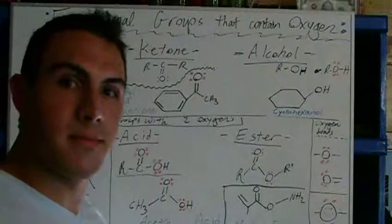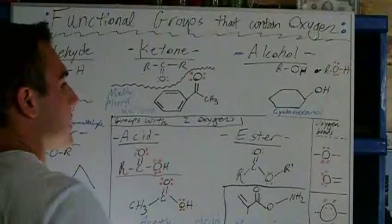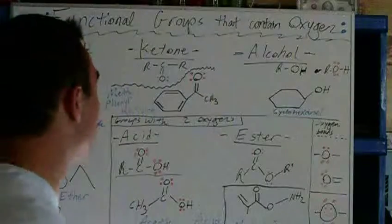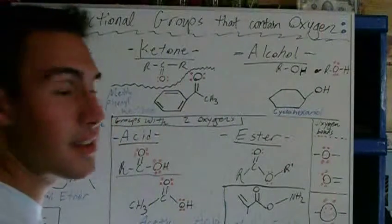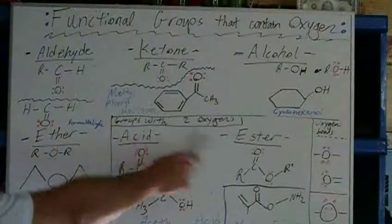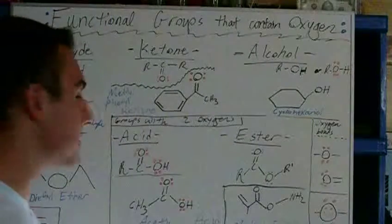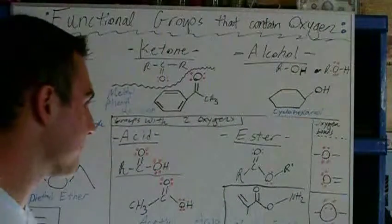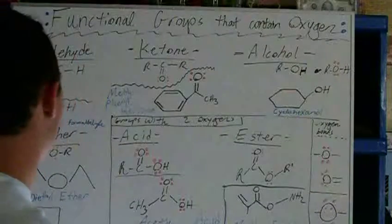In Organic Chemistry 1, for most of you, you'll learn six oxygen-containing functional groups. I'll be talking about them today just to start off our lesson. We have an aldehyde, a ketone, an alcohol, an ether, an acid, and an ester. What's interesting about an acid and an ester is they both have two oxygens in the functional group, whereas the other four only have one.